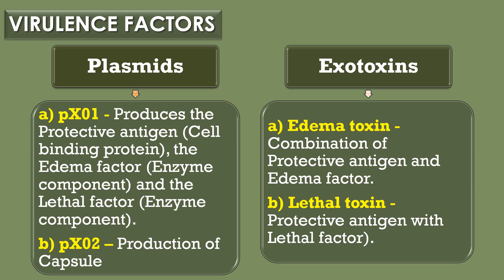The first virulence factor is plasmids, and the second virulence factor is exotoxins. Bacillus anthracis contains two toxic plasmids.